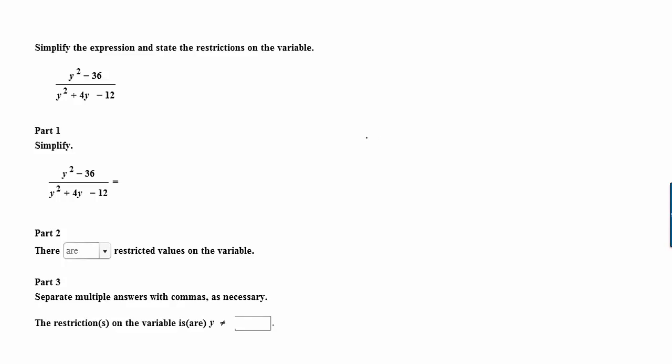Hi, I'm Ms. Hearn. Let's get started. In this video, we're going to look at simplifying a rational expression and identifying the restrictions on its domain. The rational expression is y squared minus 36 over y squared plus 4y minus 12.